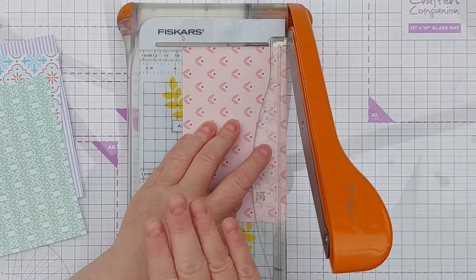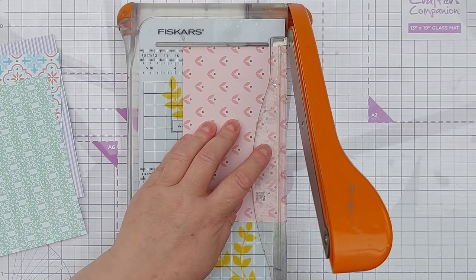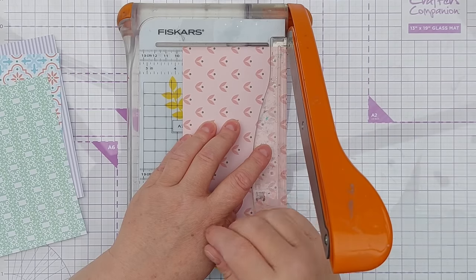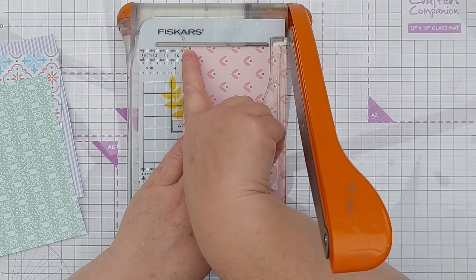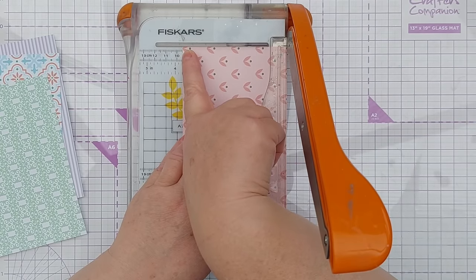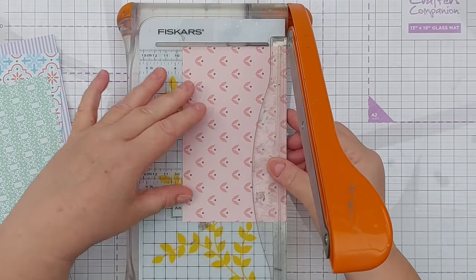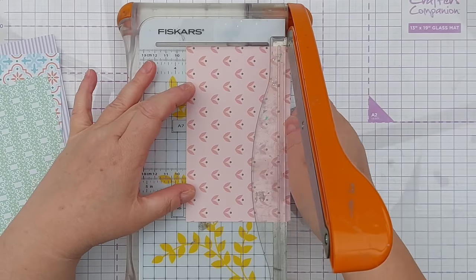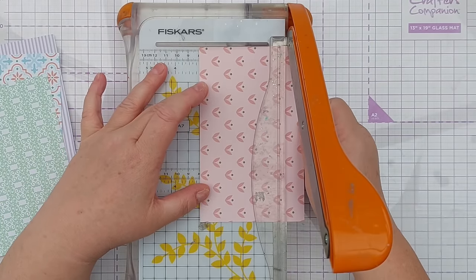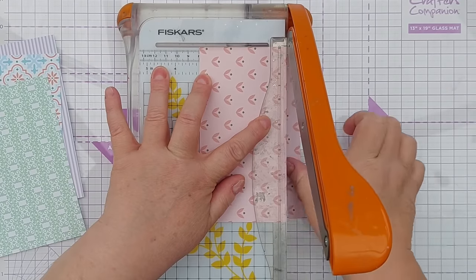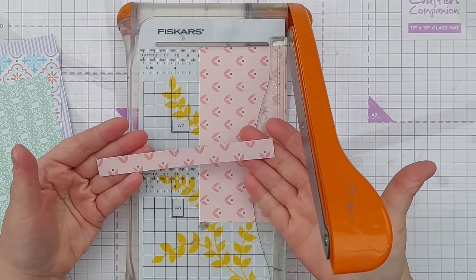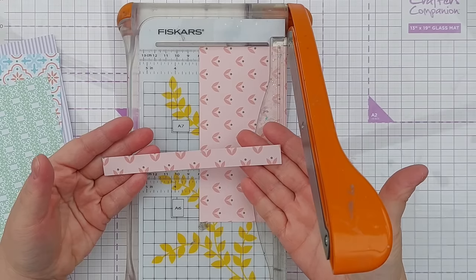I find the easiest way to use a guillotine to trim out thin strips is to measure from this end. So this end of the paper is hitting nine and a half centimeters. So I want to move it down to eight, get that lined up straight, cut and the bit that it's chopped off the end will be one and a half centimeters.